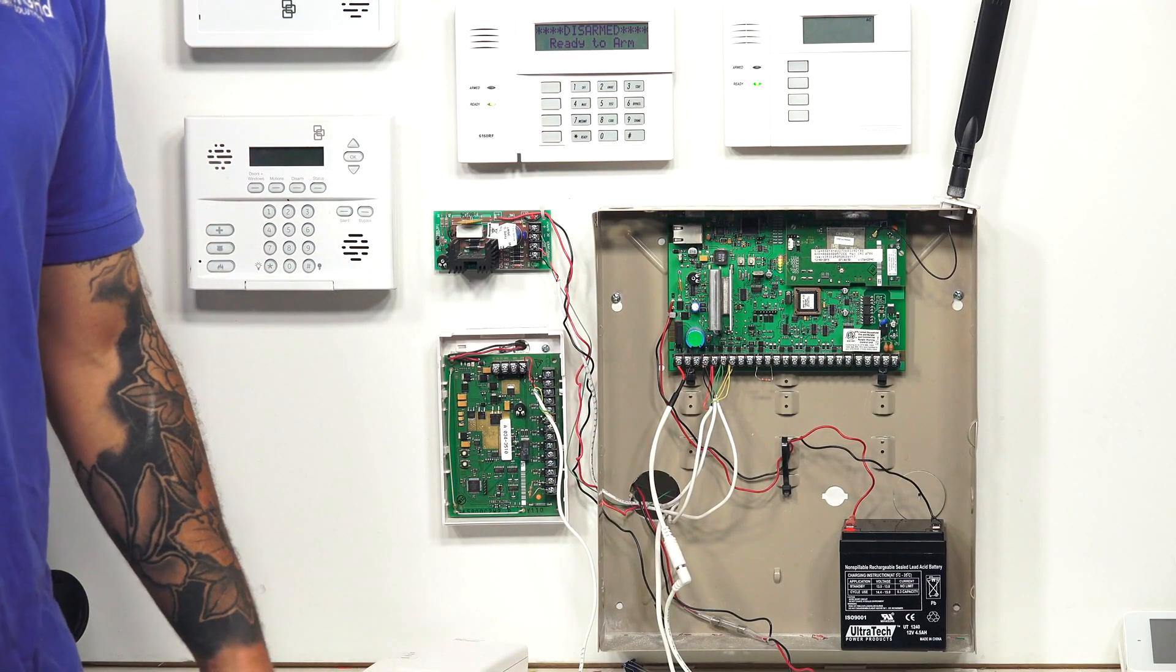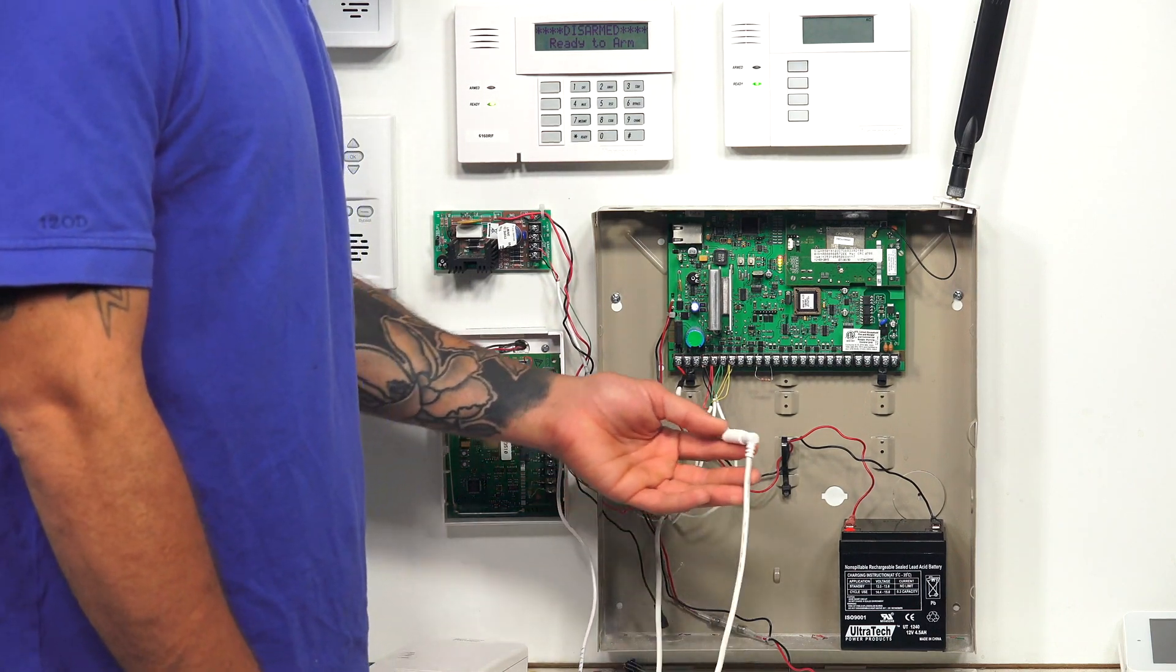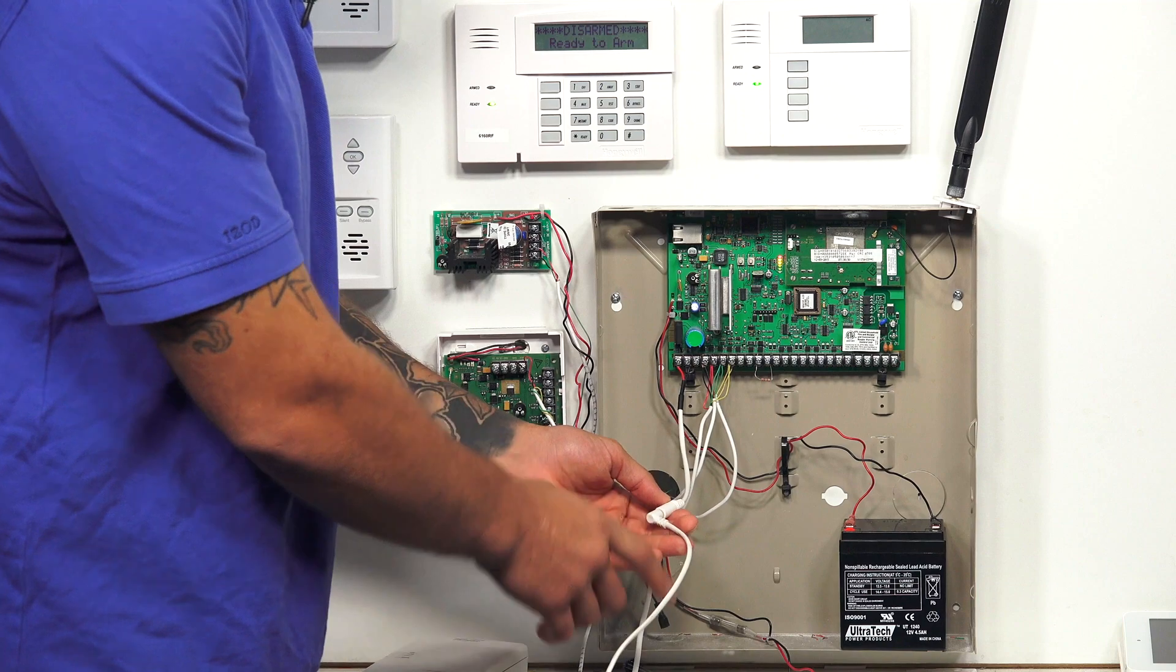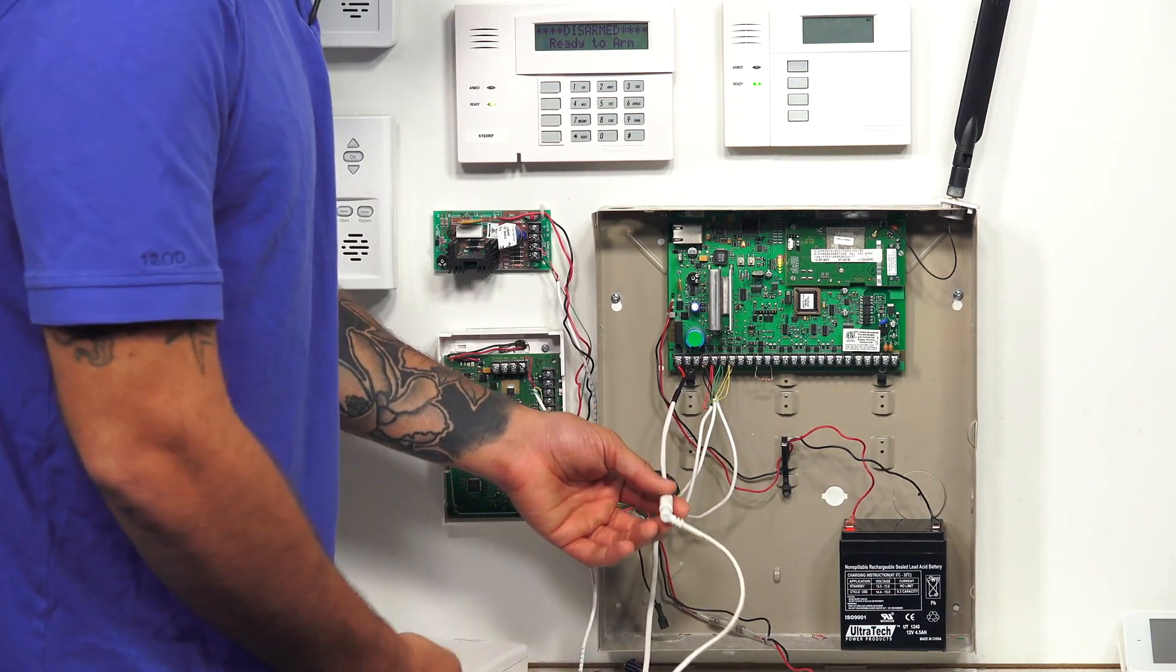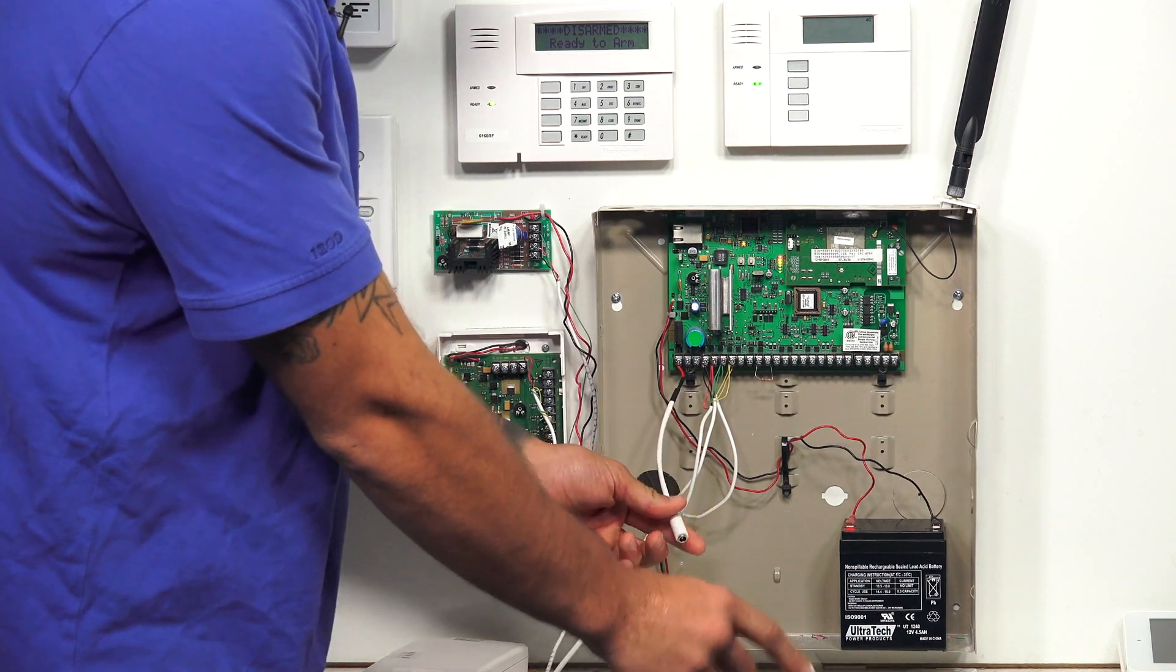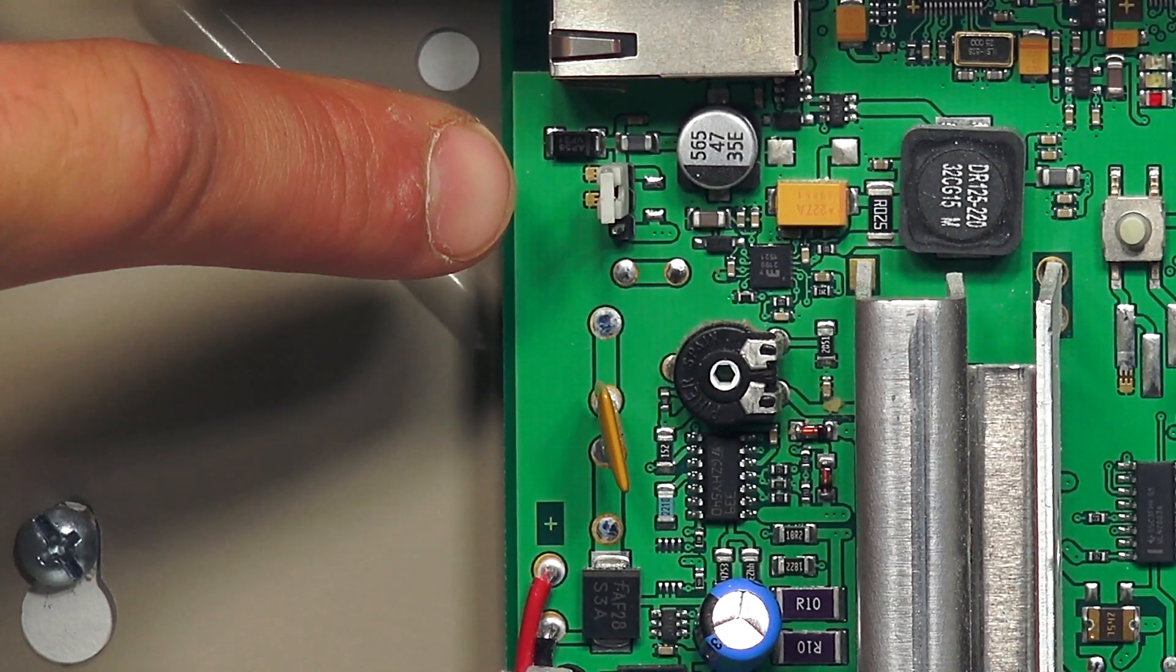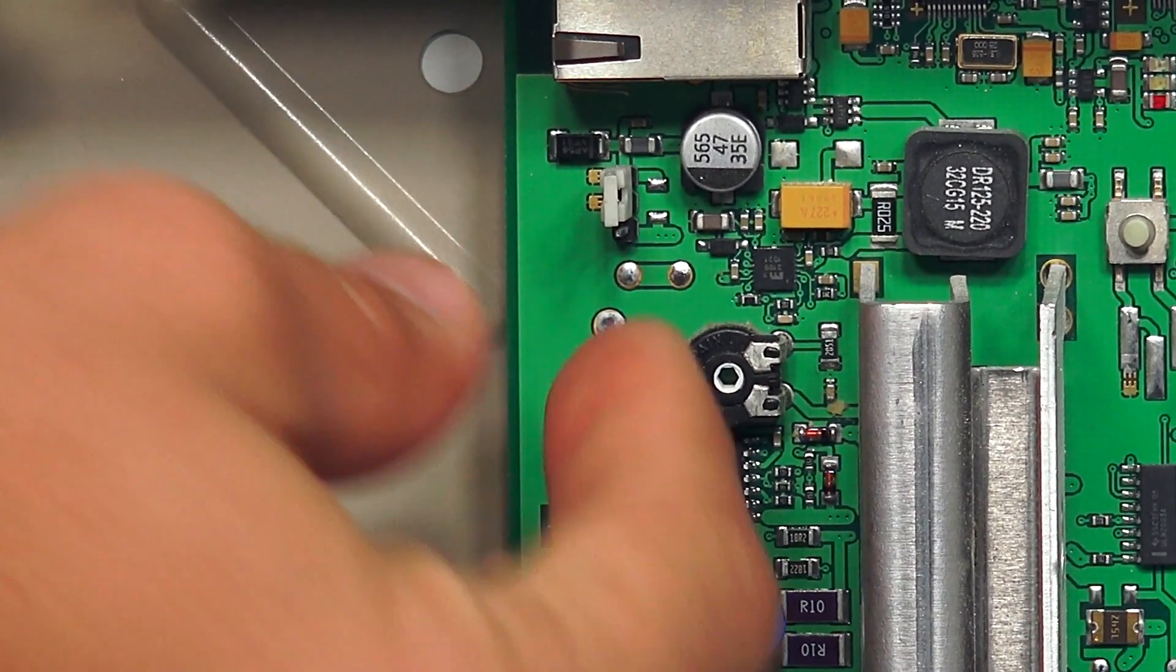So first thing is let's power down our system 100%. We have our main power from the AC transformer connected to this LT cable going into our power terminals. So I'm going to unplug that. And I'm also going to unplug our backup battery. As you can see, the system is 100% powered off.